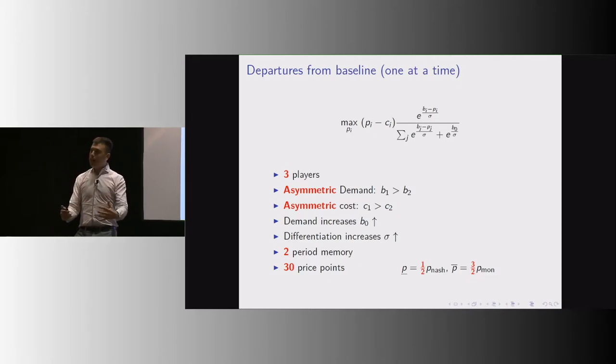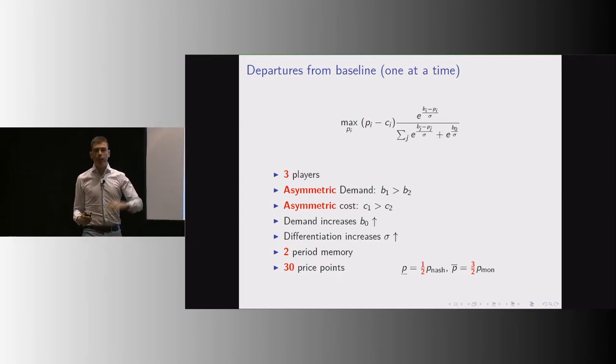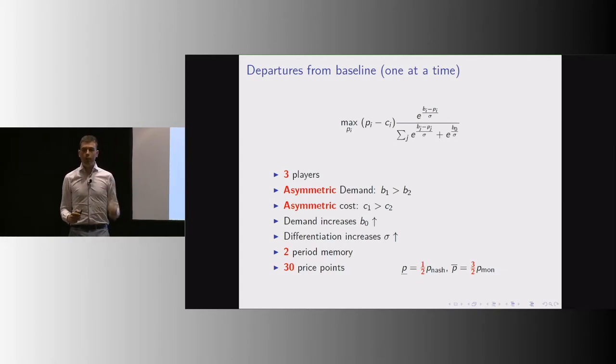Being this a very rich model, it allows us to do many things. We can play with a number of players, asymmetries in demand, in qualities, with asymmetries in cost supply. We can play with a demand shifter, differentiation, and the complexity of the model. What I can tell you is that what I'm going to present today is robust to these interventions.